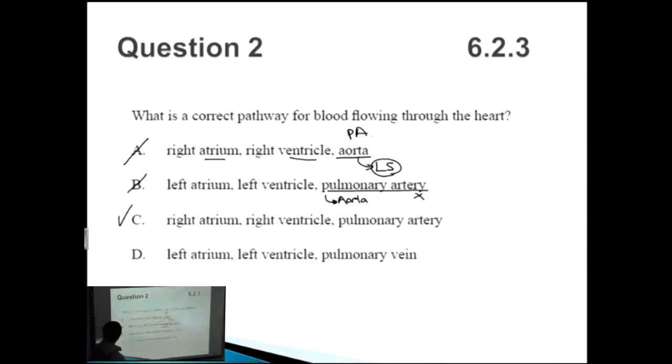C: right atrium, right ventricle, pulmonary artery. Yes, that sounds exactly right. But let's have a look at D before we jump to conclusions. Left atrium, left ventricle, pulmonary vein. That's incorrect because the pulmonary vein actually comes from the lungs and feeds back into the left atrium. If this was to be correct, it would be left atrium, left ventricle, and then aorta. Pulmonary vein is wrong, so therefore the answer is C.